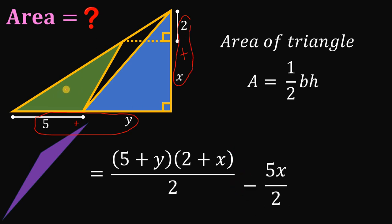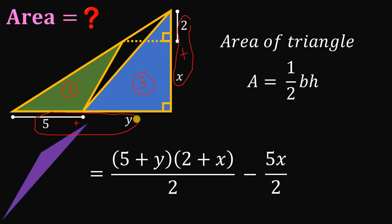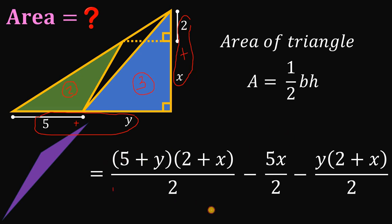Next, we need to subtract the area of the second triangle, having a base of 5 and a height equal to x. We also need to subtract the third triangle, having a base of y and a height of 2 plus x. This expression must be equal to the area of the shaded triangle, which is what we want to find.